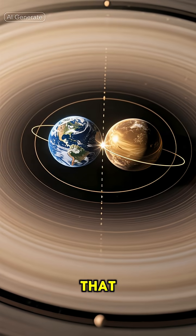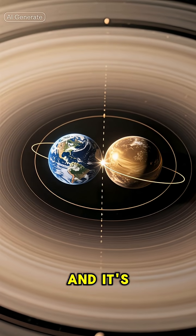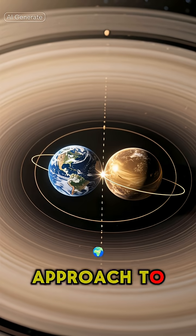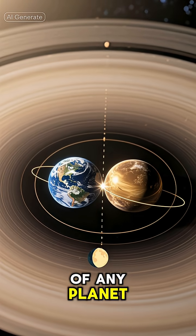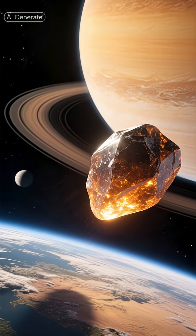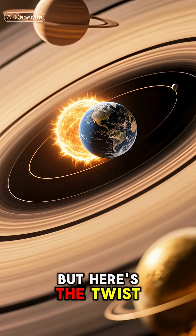We've all been taught that Venus is our planetary neighbor. And it's true that Venus makes the closest approach to Earth out of any planet. At its nearest point, it's a cosmic stone's throw away. But here's the twist.